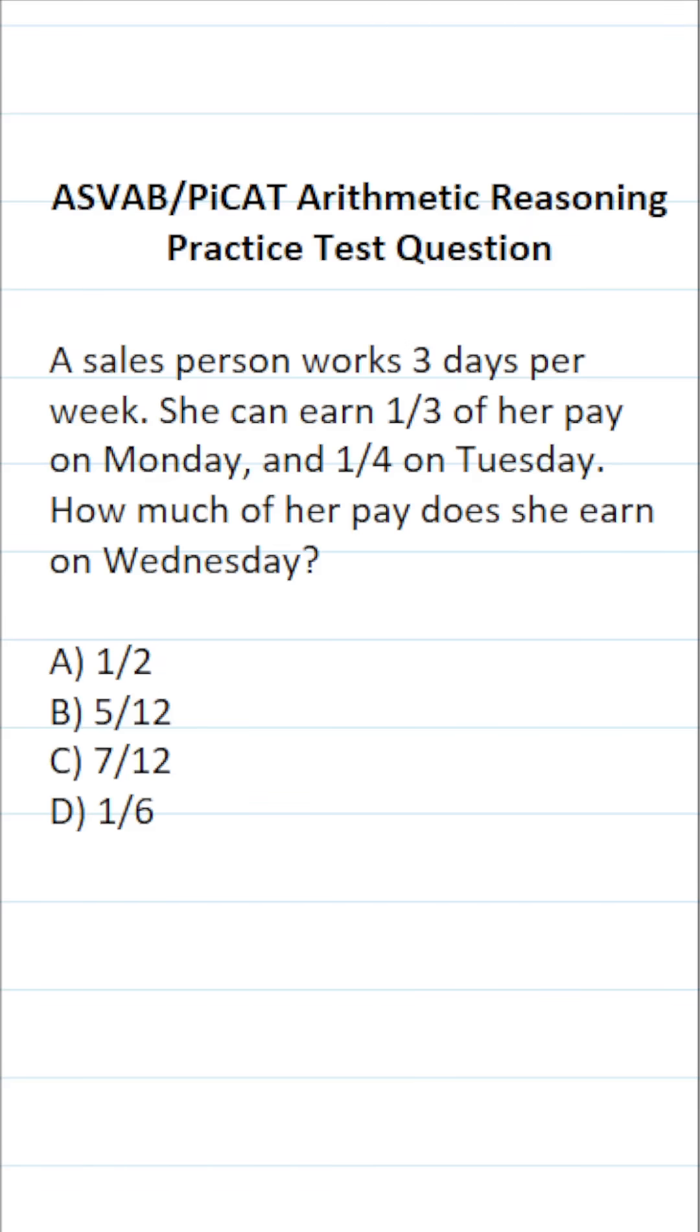This arithmetic reasoning practice test question for the ASVAB and PiCAT says a salesperson works three days per week. She can earn one-third of her pay on Monday and one-fourth on Tuesday. How much of her pay does she earn on Wednesday?